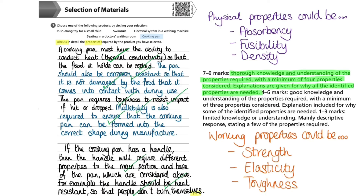If you are struggling to identify properties, think logically. The products you are given to choose from are generally ones you would have previously encountered. For instance, you know that seating in a doctor's waiting room needs to be hard-wearing as it will be in regular use and must last a long time. Hardness would also be a great property for a push-along toy to prevent it from being damaged or scratched. The key takeaway is to ensure you explain why your chosen product specifically requires each property you have identified.